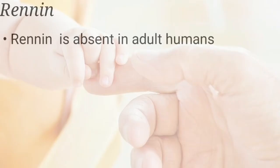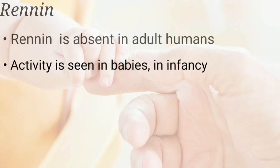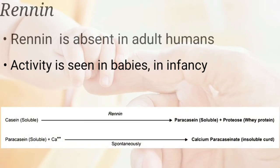Coming to the action of the second enzyme, renin. Renin is absent in adult humans; a certain amount of renin activity is seen in babies during infancy. The optimum pH is 4.0. Renin hydrolyzes peptide bonds connected with aromatic amino acids, and acts on casein of milk to form paracasein, which is immediately precipitated by calcium as calcium paracaseinate.